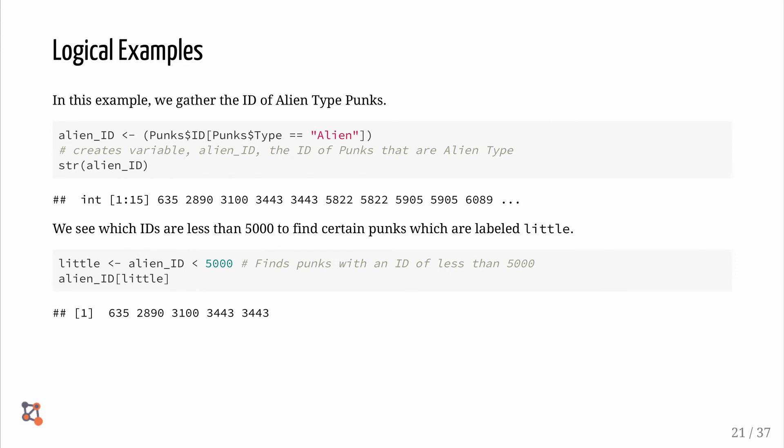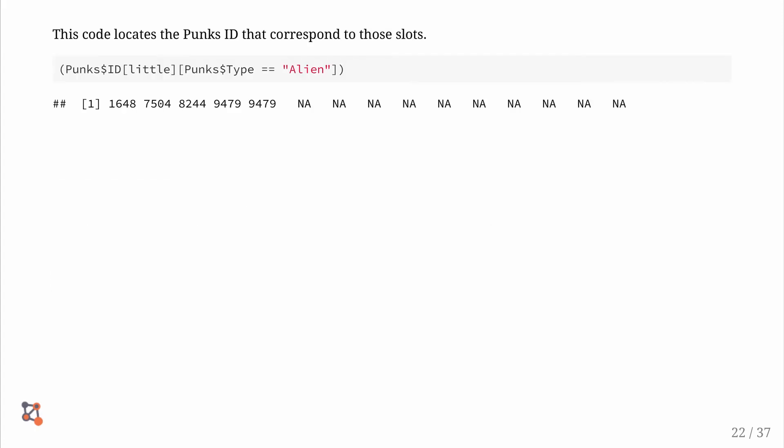In this example, we gather the ID of alien type punk. First, we create a variable, alien ID, the ID of punks that are alien type. Then we look at the structure of alien ID. We see which IDs are less than 5,000 to find certain punks which are labeled little. Now we have a variable named little with five punks that are less than 5,000. The following code locates the punks IDs that correspond to those slots.